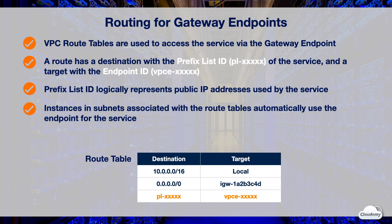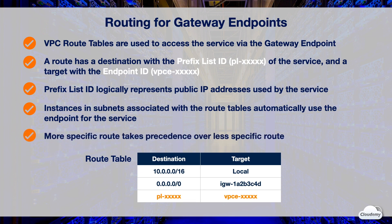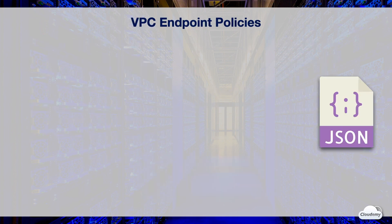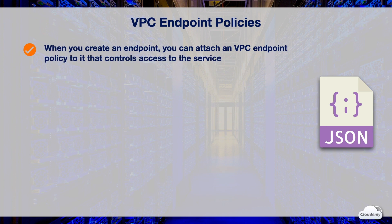For example, if you create two endpoints to Amazon S3 in your VPC, you cannot create endpoint routes for both endpoints in the same route table. AWS uses the most specific route that matches the traffic to determine how to route it. If you have an existing route for all internet traffic pointing to an internet gateway, the endpoint route takes precedence for traffic destined to the service because the IP address range the prefix list represents is more specific than the all-zero address. When you create an endpoint, you can attach an endpoint policy to control access to the service. Endpoint policies must be written in JSON format, and not all services support endpoint policies.